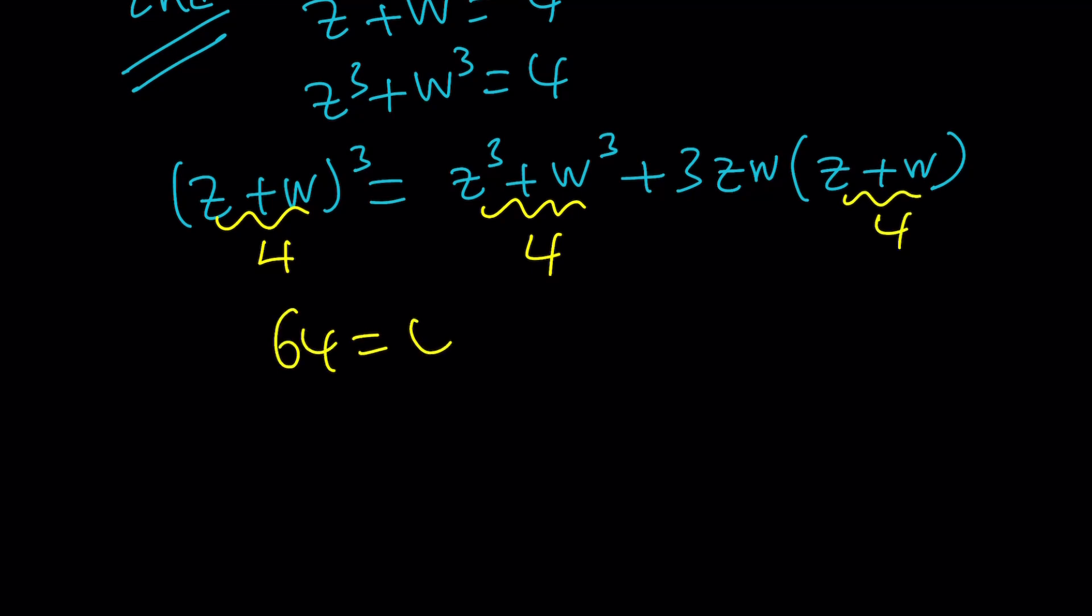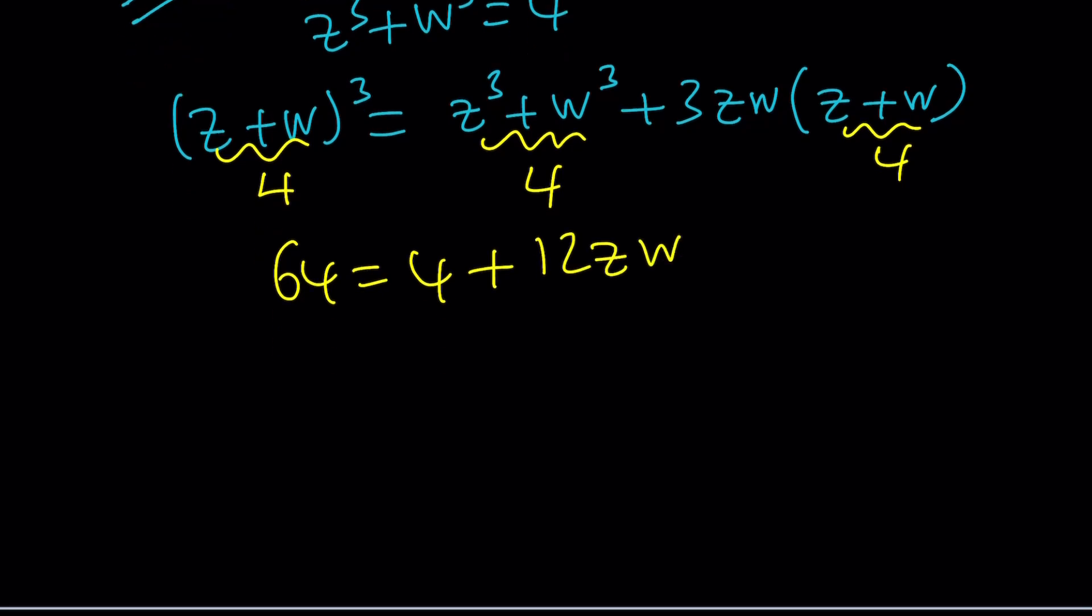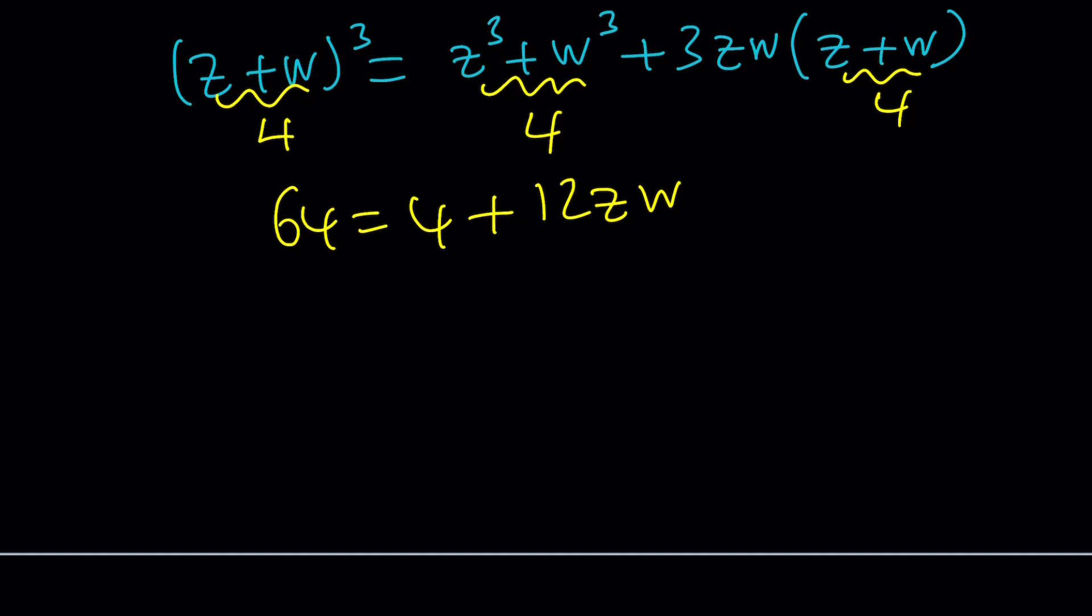64 equals 4 plus 12zw. Hopefully you'll remember that 12 from before. Subtract and divide. You're going to get zw equals 5. Right? Okay. What's that supposed to mean? I know that z plus w is 4 and zw is 5.